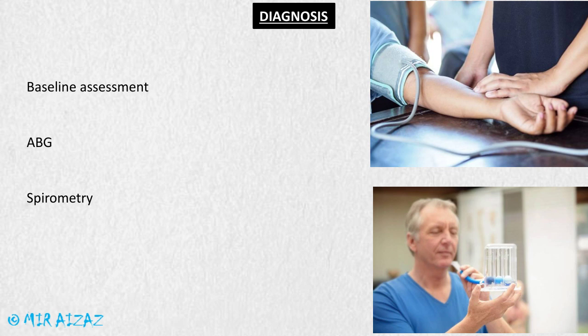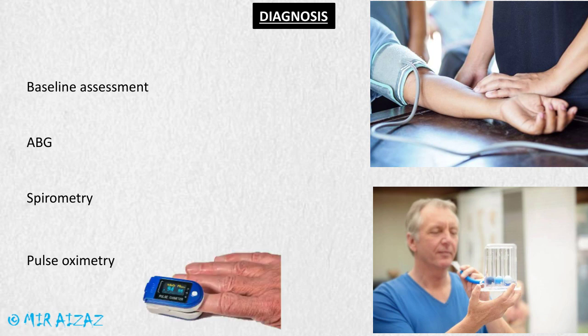A patient with swollen airways is likely to have a low spirometry score, while a patient with normal airways will have a high score. Pulse oximetry can also be used to know about the concentration of oxygen in the blood. Medical management includes bronchodilators and anti-inflammatory agents.